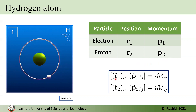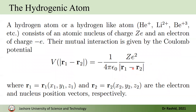We also said that these variables satisfy the canonical commutation relation. We said that the potential between the electron and the proton — or the nucleus for a hydrogen-like atom like helium-plus or lithium 2-plus — can be written exactly like this. This potential depends only on the distance between the position of the electron and nucleus.